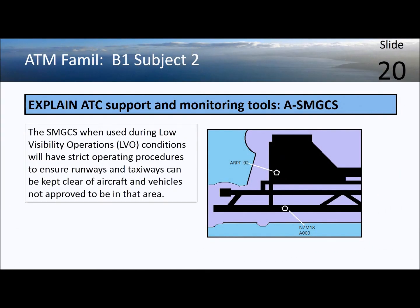In times of low visibility, aircraft operations switch to a tighter level of control to maintain safety. This mode of operation is referred to as LVO — low visibility operations. This usually means fewer aircraft movements are permitted, and only specially equipped aircraft and vehicles may be able to operate at these times.